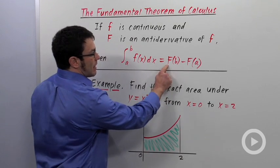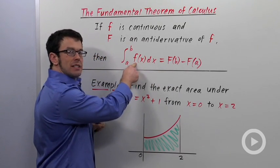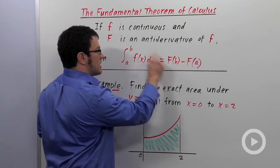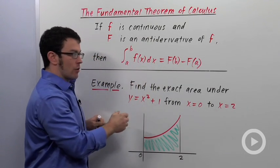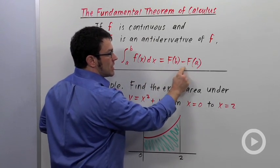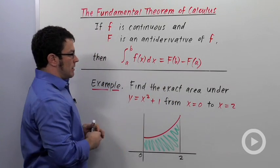Capital F is an antiderivative of this inside function. This b is the same as this b, this a is the same as this a. So you can evaluate a definite integral exactly using an antiderivative and just evaluating it and subtracting.